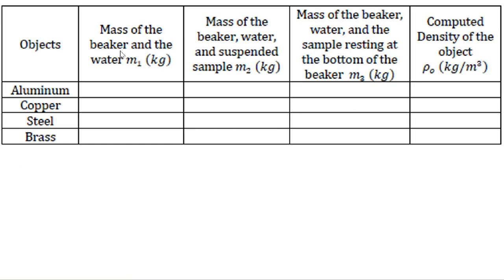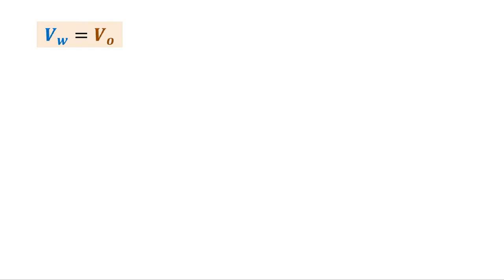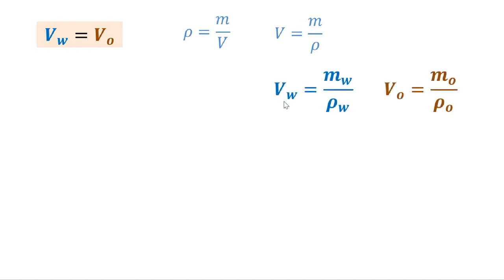By doing so, first we will get the mass of the beaker and the water without the object — that is M1. Second, we will suspend the object to get M2. Third, we will let the mass rest at the bottom, which we call M3. We have to note that the volume of the displaced water is equal to the volume of the object.